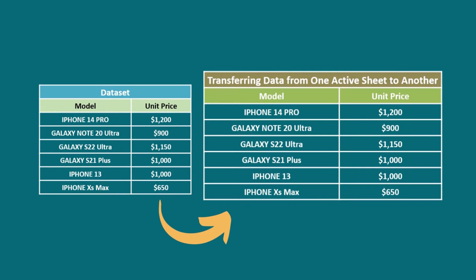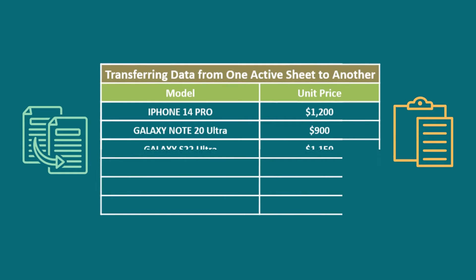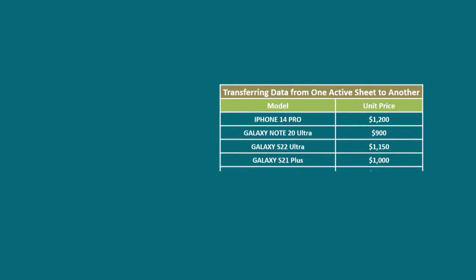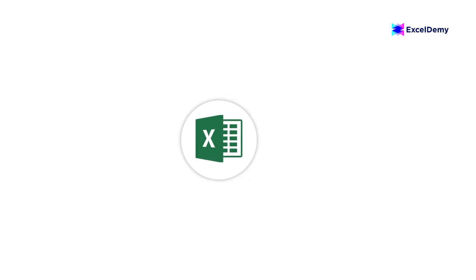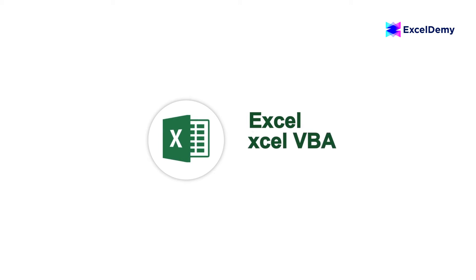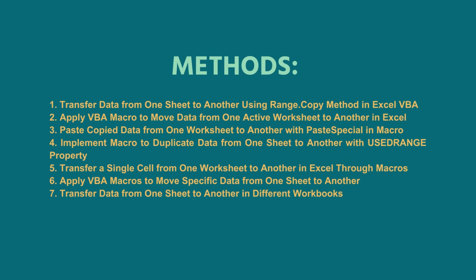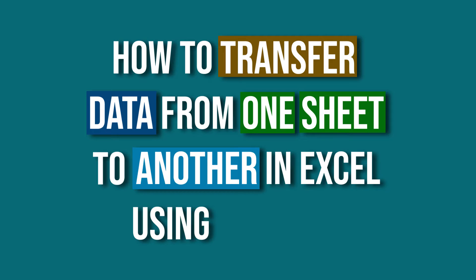In our day-to-day lives, we often need to transfer data from one Excel worksheet to another. Manually copying and pasting the data is one option, but this process is tedious. You can apply VBA macros to get your job done within a second. Welcome to Excel Demy, your day-to-day Excel and VBA tutorial helpline. This is Hadiul Bashar, and today I'll demonstrate 7 different methods of how to transfer data from one sheet to another in Excel using macros.